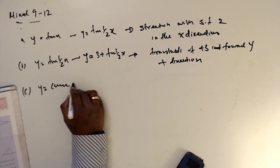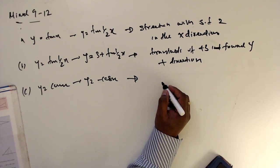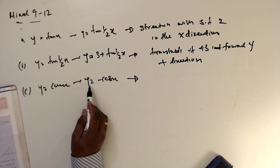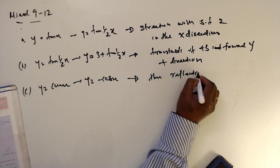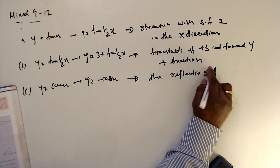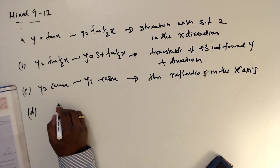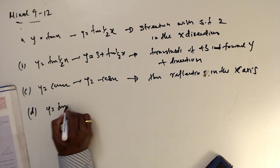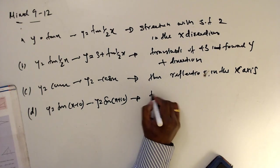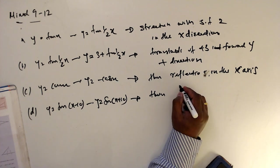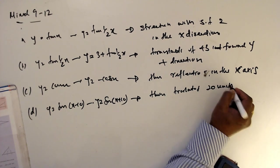Part c: y equals cos x transforms into y equals minus cos x. Since this is affecting the y-value, this is a reflection in the x-axis. Part d: y equals sin(x minus 10) transforms into y equals sin(x plus 10). This is a translation of 20 units in the negative x-direction.